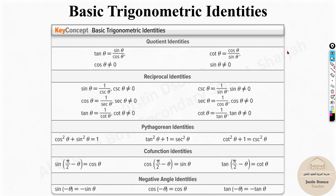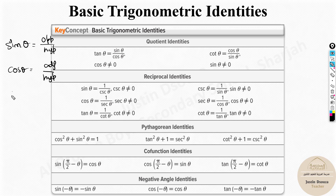Now let's look at the basic trigonometric formulas. We have sin θ = opposite / hypotenuse, cos θ = adjacent / hypotenuse, and tan θ = opposite / adjacent — or equivalently, sin θ / cos θ. Tan is sin over cos, which you can verify by dividing those ratios directly.